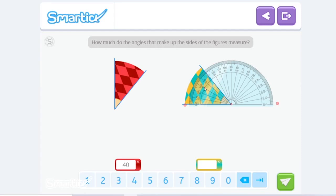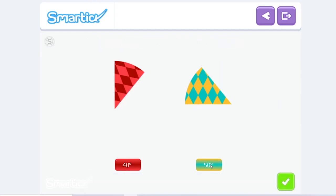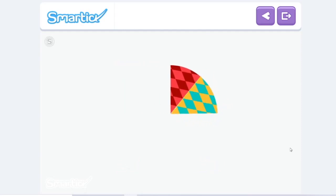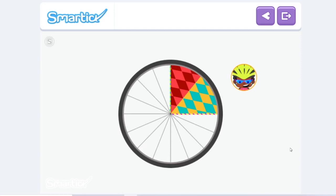So 0, 10, 20, 30, 40, 50. I think it measures 50 degrees. Perfect! The one on the left has an angle of 40 degrees. And the one on the right measures 50 degrees. Notice that the measurement of both decorations make a right angle.